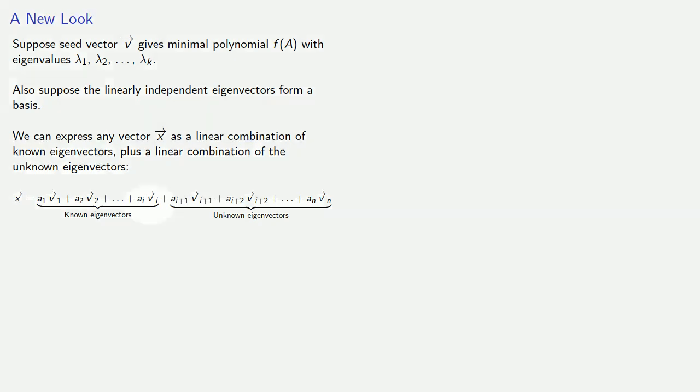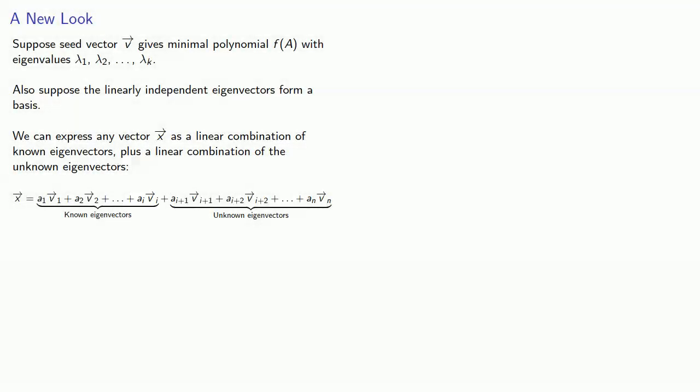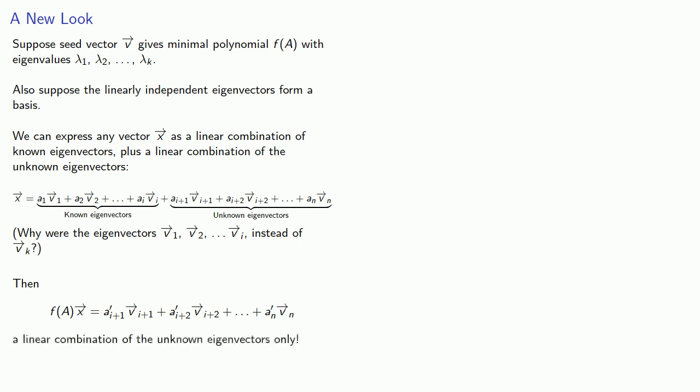And notice the indexing. We have i eigenvectors, but we assumed we had k eigenvalues. And so you might wonder, why were the eigenvectors v1 through vi instead of through vk? And here's the important connection to make. If we apply our minimal polynomial to this vector x, what we get is a linear combination of the unknown eigenvectors only.